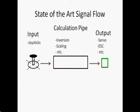So this is the state of the art — it shows the signal flow. You can see there's a joystick and it's connected to a calculation pipe, and this for itself is connected to the output. In the calculation pipe you most often have functions like inverting the signal, scaling it, and maybe giving it an offset. And the output is a servo, ESC, lamp, or whatever. And this structure is mostly very fixed — you can't really change it.